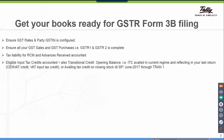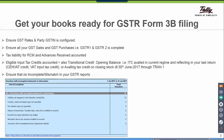Eligible input tax credits are accounted, which may also include transitional credit, i.e., opening balance input tax credit availed in the current regime and reflecting in your last return — that could be CENVAT credit, VAT input tax credit, or availing tax credit on closing stock dated 30th June 2017 through TRAN 1. Ensure that there is no incomplete mismatch in your GSTR reports. These are the potential exceptions which require correction before you make the data ready for filing your GSTR 3B.